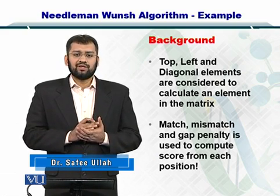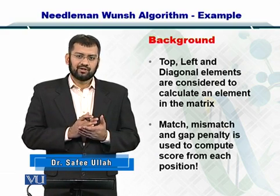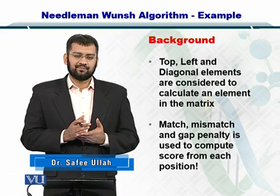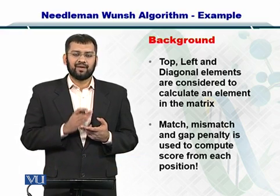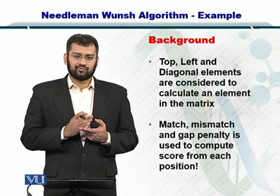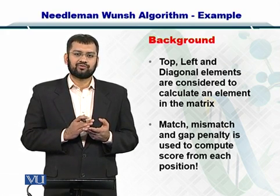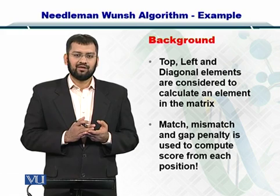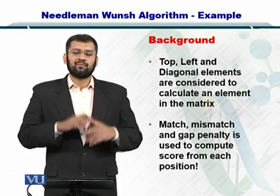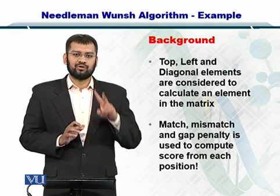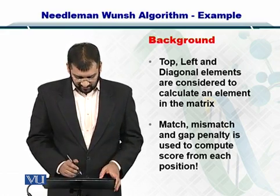Now during this process, you use gamma, alpha, and beta. Gamma is the gap penalty, alpha is the matching score or reward, and beta is the mismatch penalty. Using these three values that we'll see in this example, we'll compute the entire matrix for two sequences.